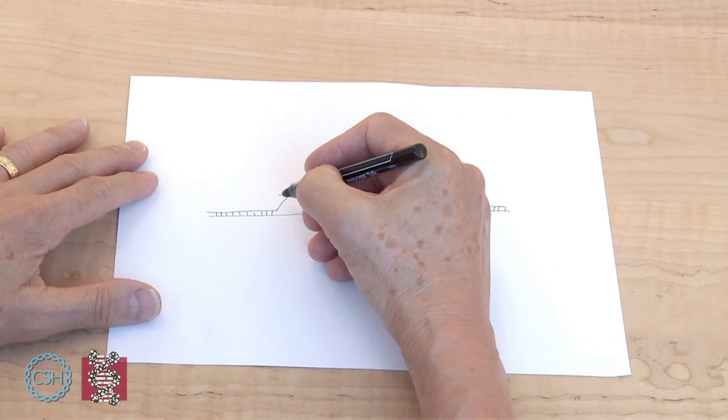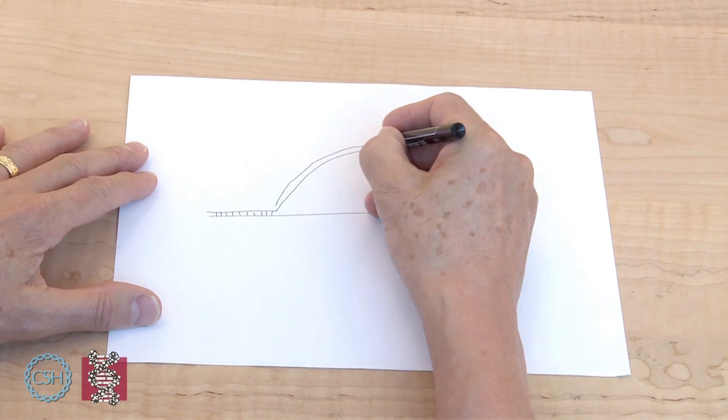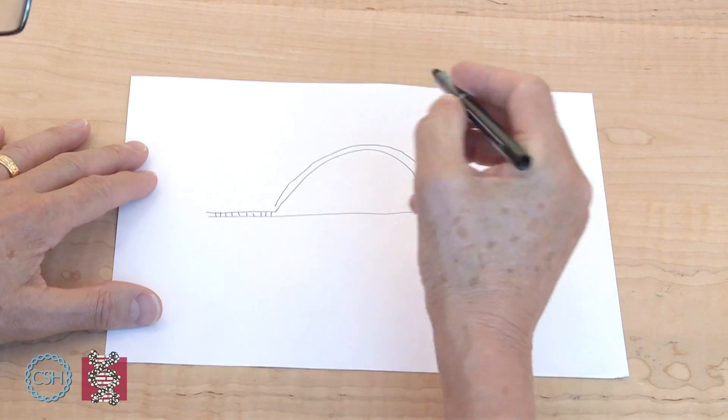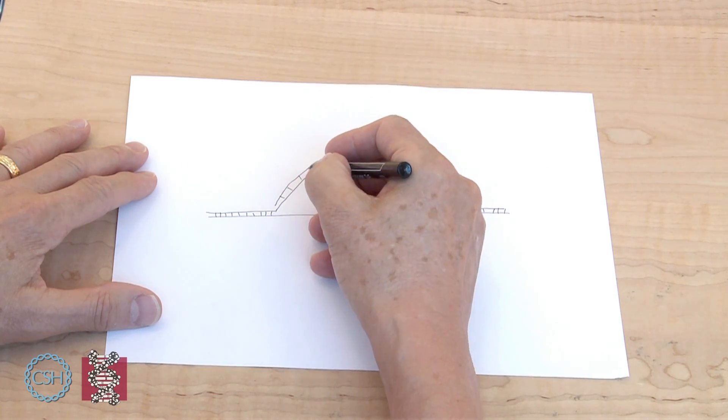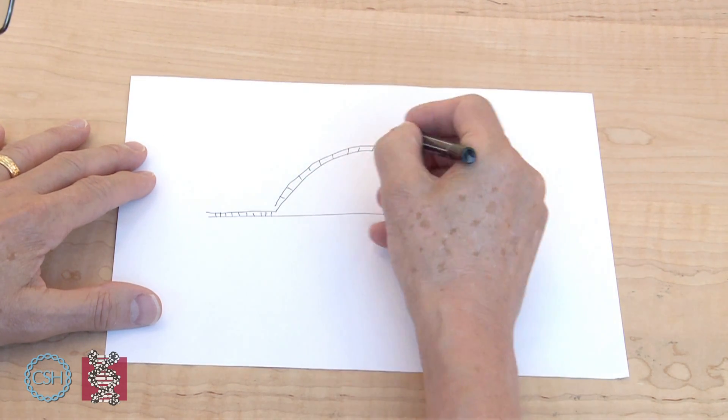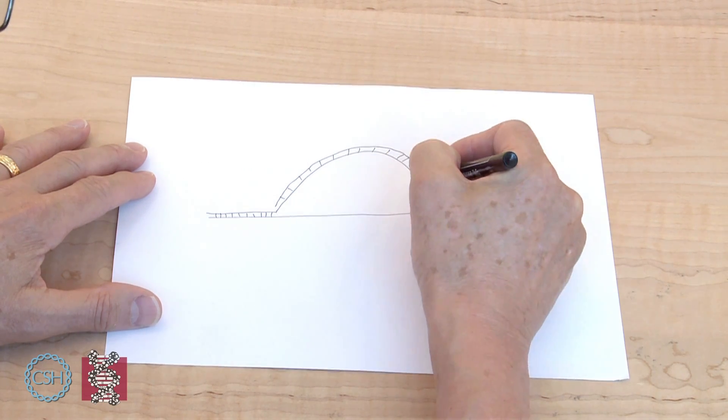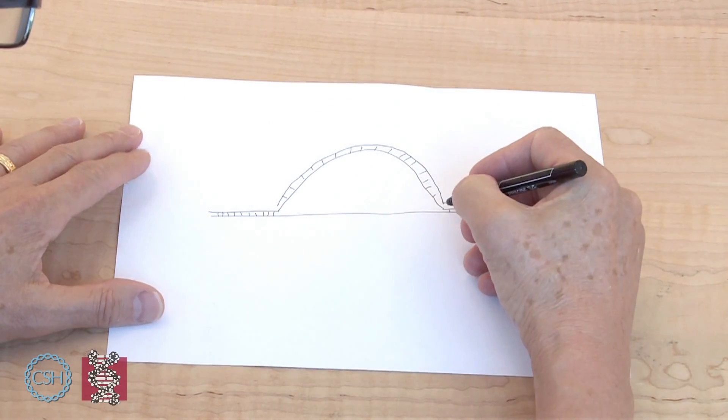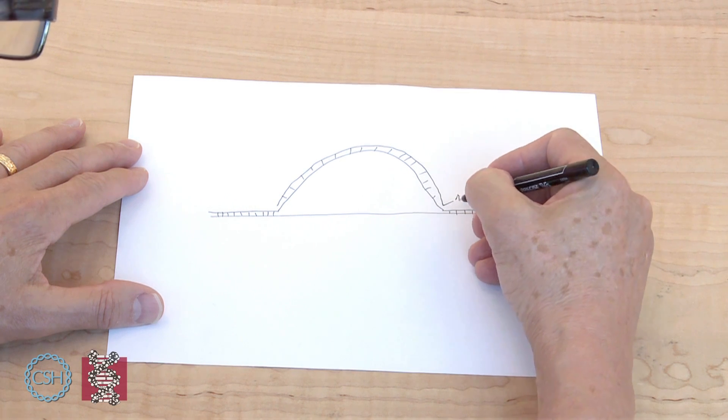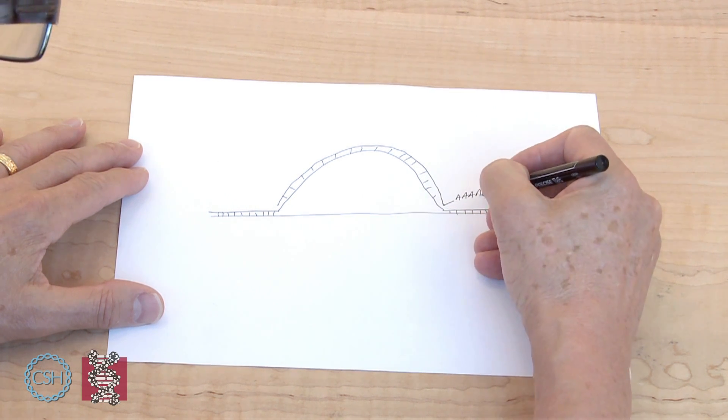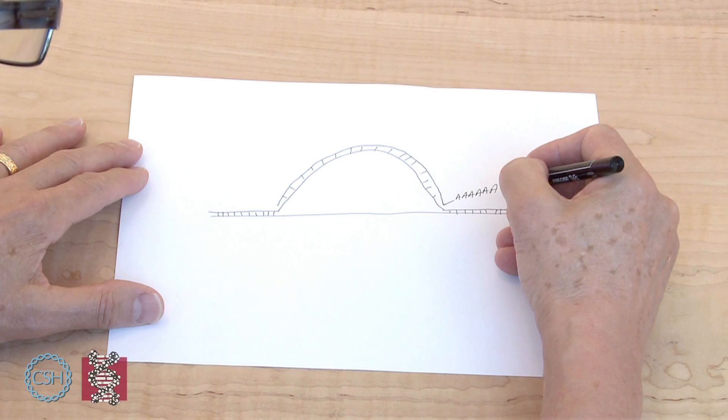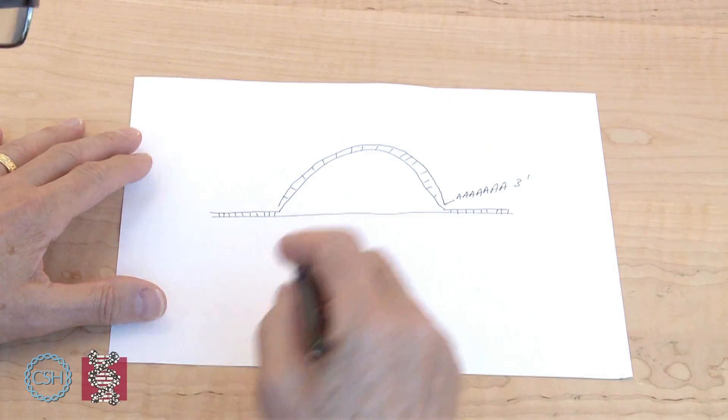And the messenger RNA hybridizes to this strand of the DNA. Now the thing about eukaryotic messenger RNAs is at the 3' end they have a tail, poly A residues. It's just a whole string of poly A residues.